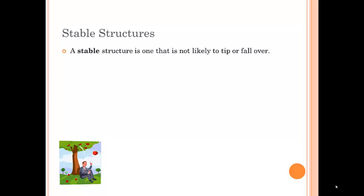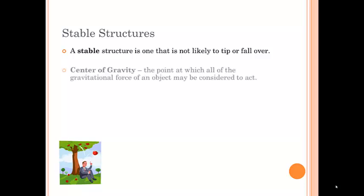We need to also talk about stable structures. A stable structure is one that is not likely to fall or tip over. In order to do that we need to know about center of gravity. That's the point at which the gravitational force of an object is acting. Probably where the most mass in the building is.